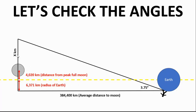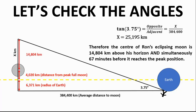But how far can Ron actually see below that moon? We've just got to do the simple trig. This angle here, 3.75 degrees, the tangent of that angle equals the opposite side over the adjacent side. So x, our unknown, over the average distance to the moon of 384,000 kilometers means that this line from here to here is 25,195 kilometers. Therefore, the center of Ron's eclipsing moon at 6:19 AM is 14,804 kilometers above his horizon, and simultaneously, this is the important part, simultaneously 67 minutes before it reaches that peak position.